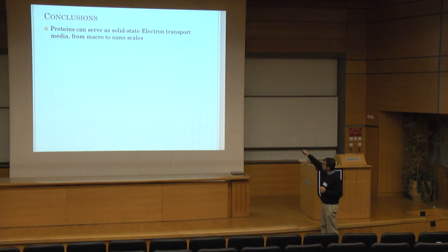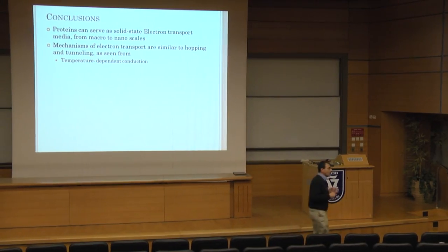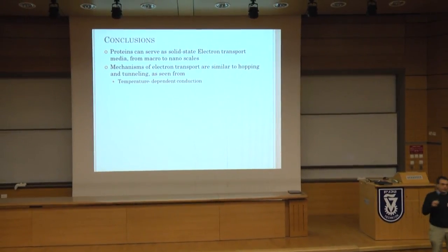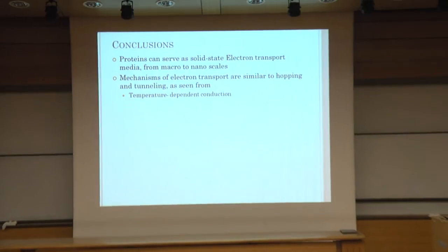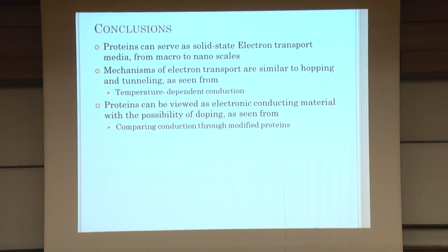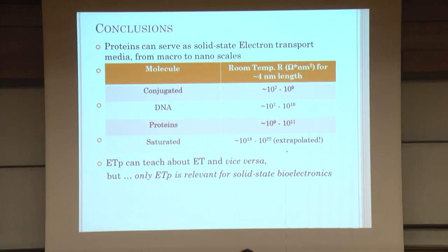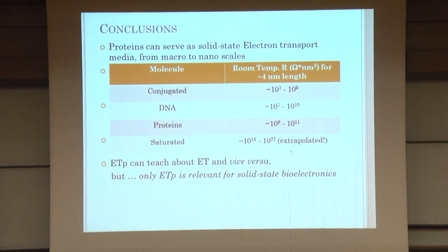So the conclusions are that proteins can definitely serve as solid-state electron transport medium. And that the mechanisms that we see can for the moment be explained by hopping and tunneling, although we have this big question, why are they so efficient? What is there that seems to give them this extra boost in efficiency that we wouldn't expect? Yes? Then they can also be doped. And this we get from comparing the conductions from modified proteins. This we got from temperature-dependent conduction. And both the type of the contact and the orientation are important. And furthermore, the electron transport studies that we do can teach us about natural electron transfer and we can learn from that as long as we keep in mind that there are very significant differences. And only ETP naturally is relevant to the bioelectronics of solid-state bioelectronics if there ever will be one.